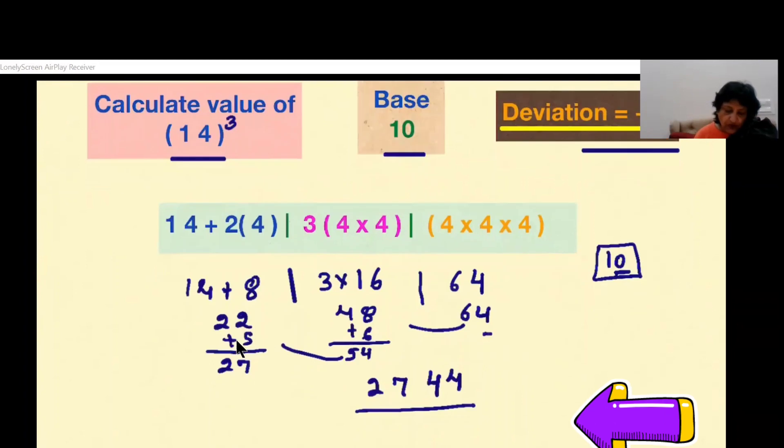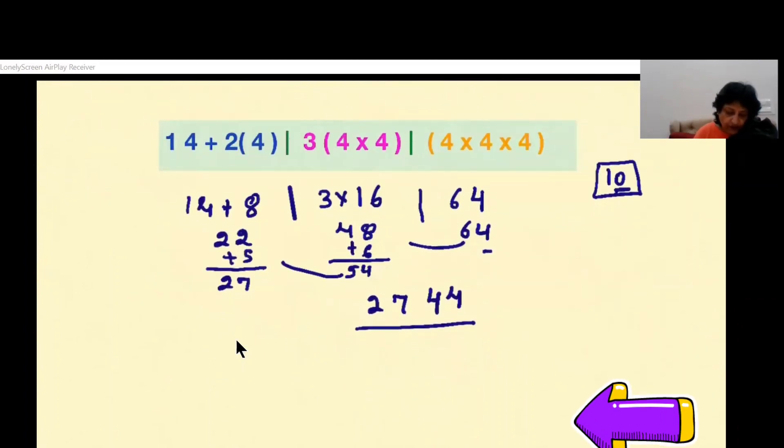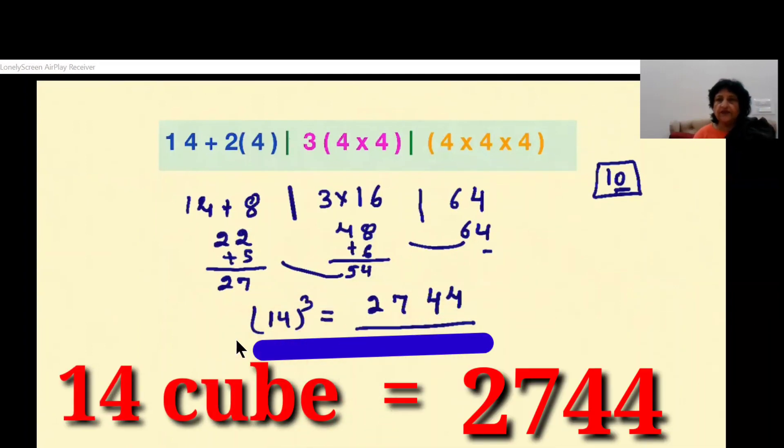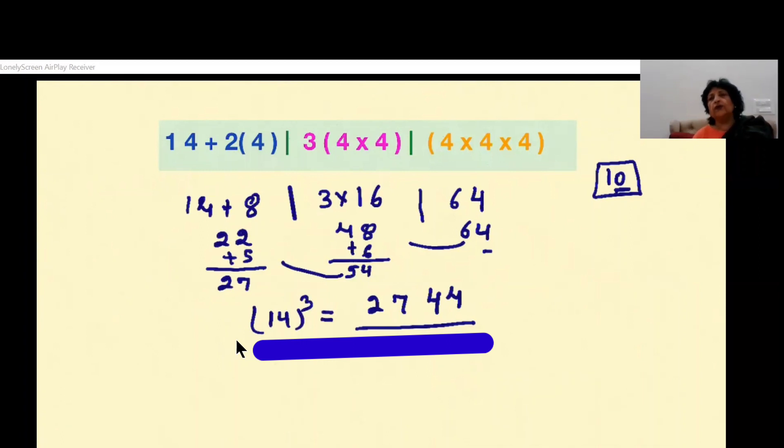So cube of 14, that is 14 cubed, is equal to 2744. Now this is the method, look how easy it is.